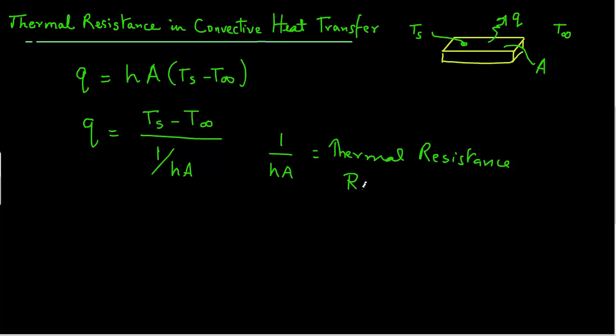And we will call that RT convection. So RT convection equals 1 over H A.